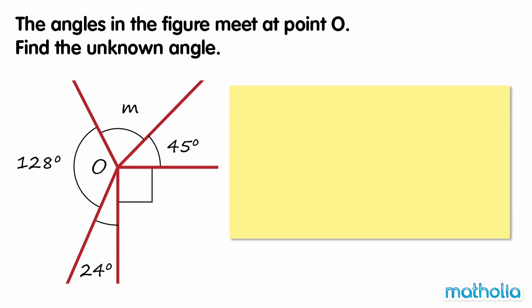The angles in the figure meet at point O. Find the unknown angle. To find angle M, let's find the sum of the known angles, then subtract the sum from 360 degrees.